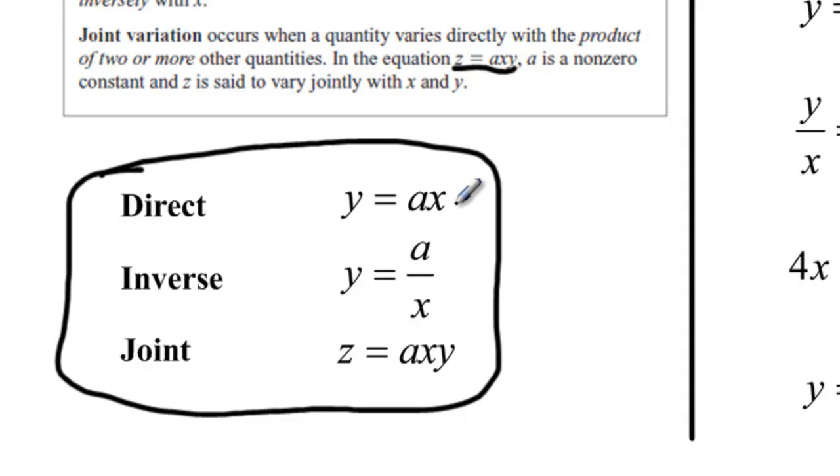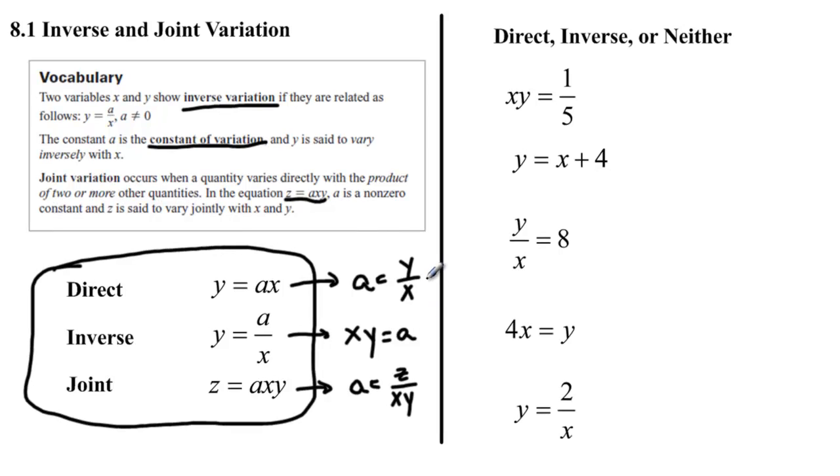The other thing that I like to do is I like to look at this and say what would happen if I get a by itself? And in this case a would equal y over x and if I can get y divided by x then I know that y varies directly with x. Likewise if I take this equation and I multiply both sides by x I would get xy equals a.